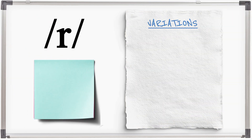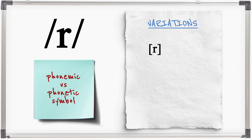The symbol used for R in phonemic dictionaries for English is actually a trill symbol. The symbol for an alveolar approximant is a different R symbol, and you will see this in phonetic transcriptions of the sound.